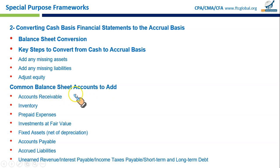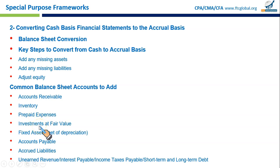Common balance sheet items to add when converting include: accounts receivable — money owed from customers not yet collected; inventory — goods or products purchased to sell; prepaid expenses — payments already made for goods or services not yet received, like advance rent; and investments reported at fair value — investments reported at current market price rather than original cost.